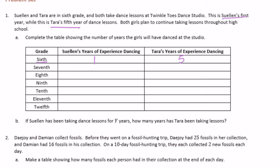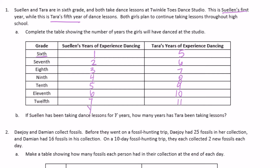They're both going to continue dance every year through high school. So by seventh grade, Sue Ellen would have two years, eighth grade would be three — we can just add one year for every year she dances and do the same for Tara. So if Sue Ellen has been taking dance lessons for y years, how many years has Tara been taking lessons?